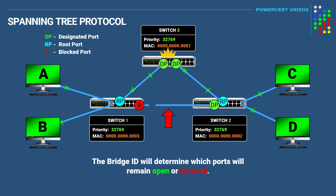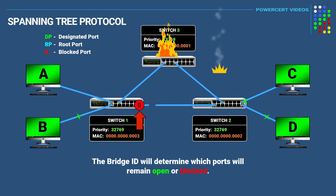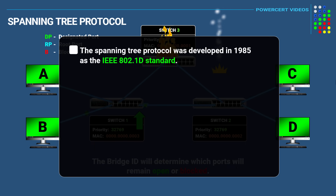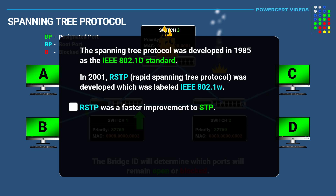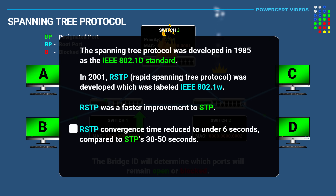STP has to go through all these steps to find out which port or ports to block. But if any of these other links or devices were to go down, STP will reactivate that blocked port and bring the link back up. The spanning tree protocol was developed in 1985 as the IEEE 802.1d standard. In 2001, RSTP — Rapid Spanning Tree Protocol — was developed, labeled the IEEE 802.1w standard. RSTP significantly improved adaptation speed: where STP can take 30 to 50 seconds to adapt, RSTP can do it in under 6 seconds, and it is also backward compatible with STP.